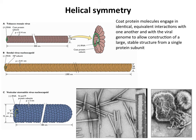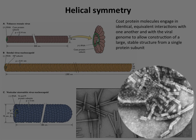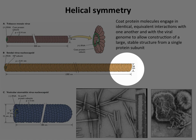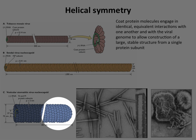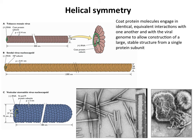A photograph of measles virus shows its helical nucleocapsid as well. When the particle is broken open, the EM dye gets inside and stains the helical nucleocapsids. Similarly, the vesicular stomatitis virus — a relative of rabies — has a nucleocapsid of a single protein arranged in a helical fashion with the viral RNA inside.